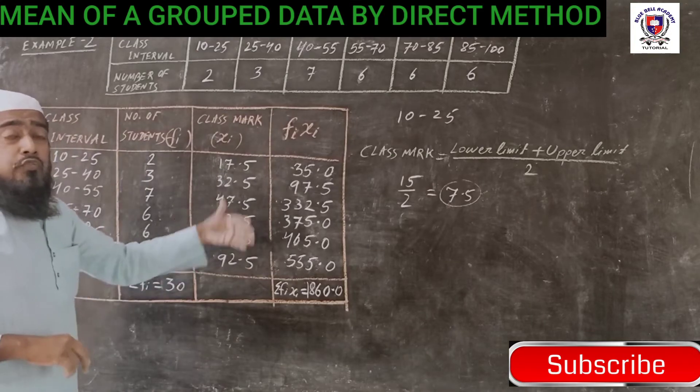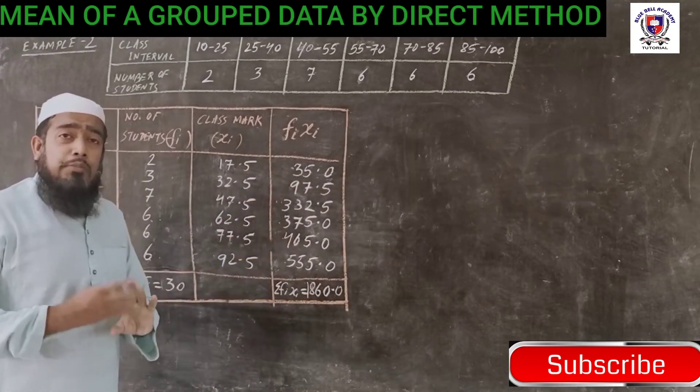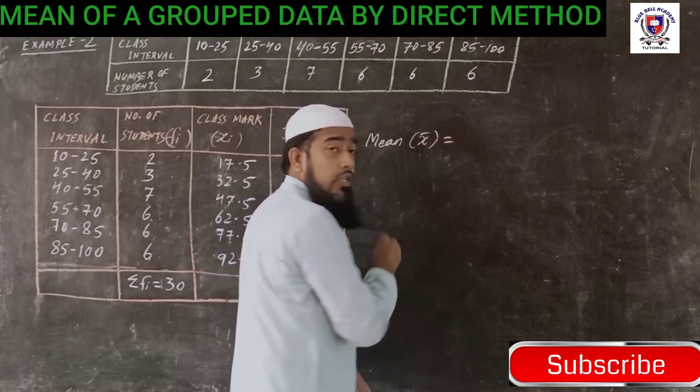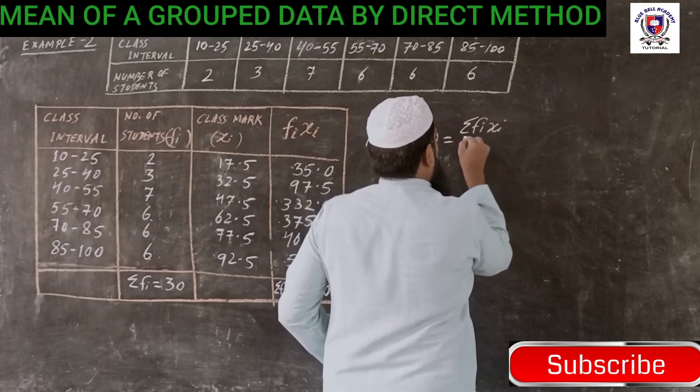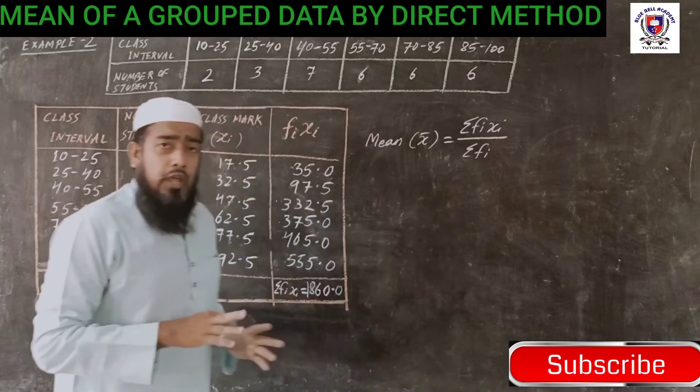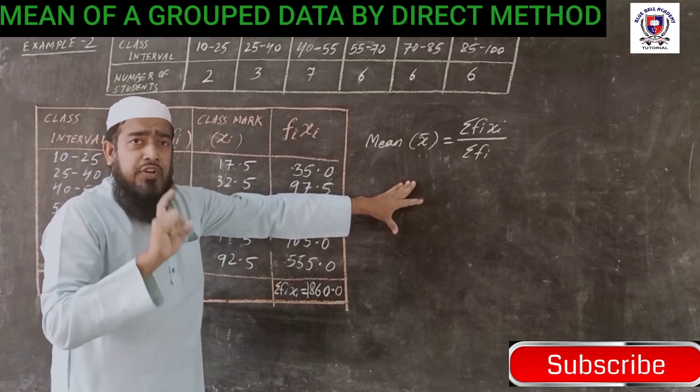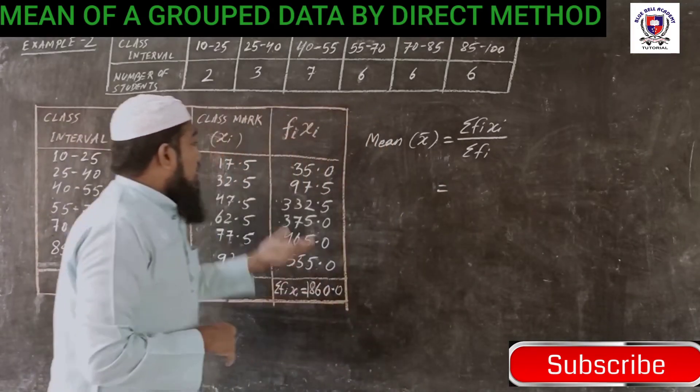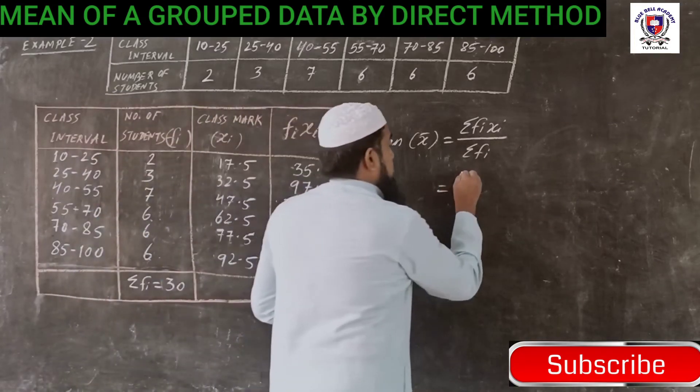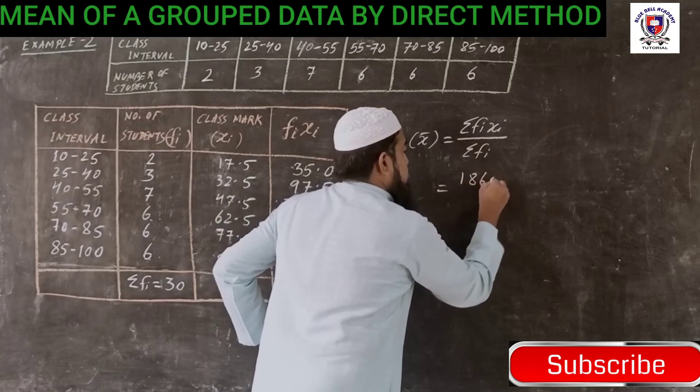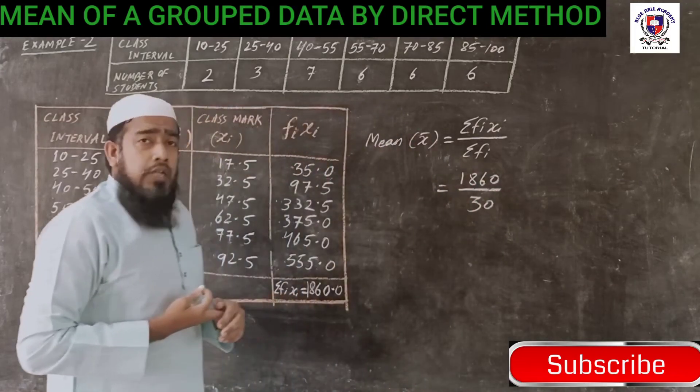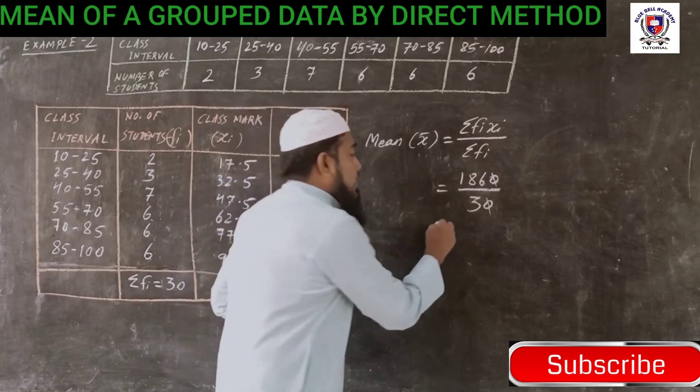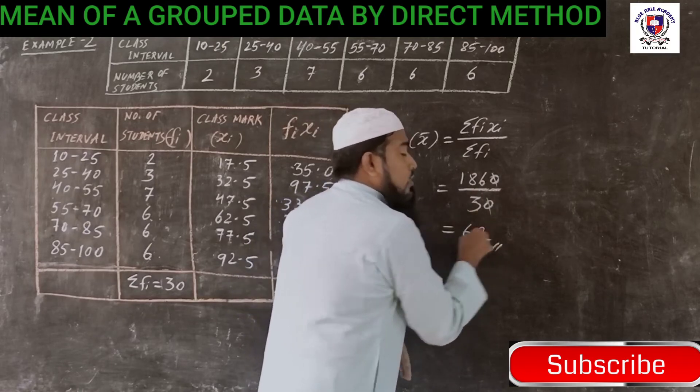Now we are going to find the mean. The formula to calculate mean, which is denoted by X bar, is sigma fi times xi divided by sigma fi. The formula is same in ungrouped data and grouped data. Only one difference: in grouped data, the class interval is there and we have to find the class mark. So we take our values: 1860 divided by 30. We can cancel: 0 and 0 get cancelled first. Now divide 186 by 3: 6 threes are 18 and 3 twos are 6. So 62 is your answer.